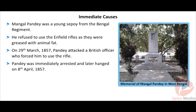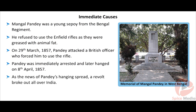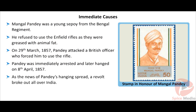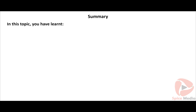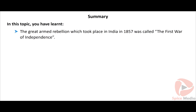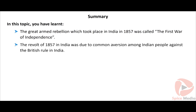Mangal Pandey was a young sepoy from the Bengal regiment. He refused to use the Enfield rifles as they were greased with animal fat. On 29th March 1857, at Barakpur near Kolkata, Pandey attacked a British officer who forced him to use the rifle. Pandey was immediately arrested and later hanged on 8th April 1857. As the news of Pandey's hanging spread, a revolt broke out against the British all over India.